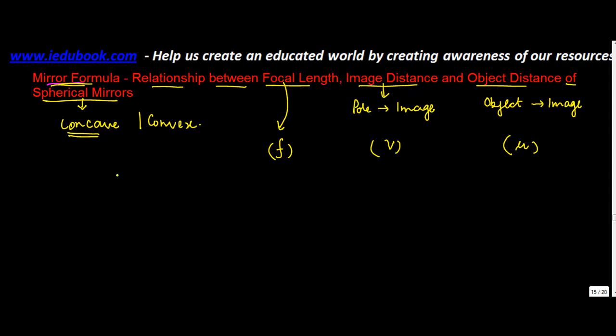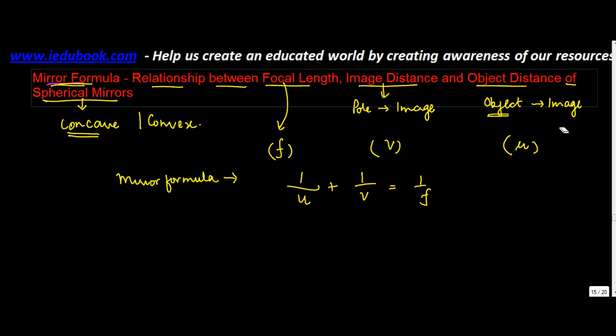And the mirror formula says that the reciprocal of 1 upon the image distance which is U plus the reciprocal of 1 upon V is equal to 1 upon F, which means that the reciprocal of the object distance... I am sorry, I think I made a small mistake here. This has to be object from the pole.